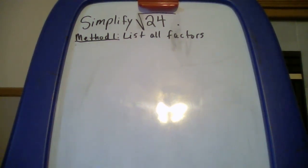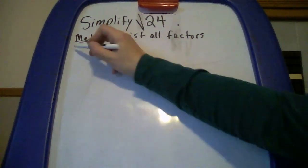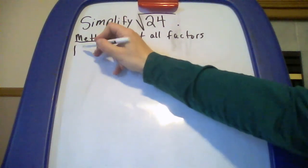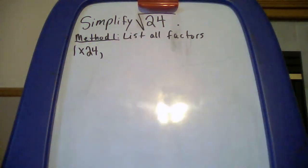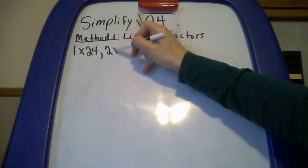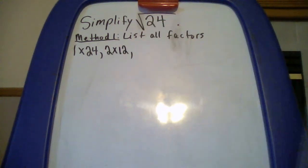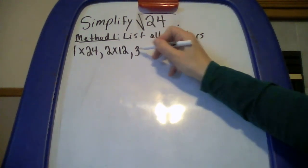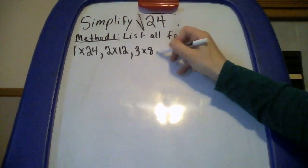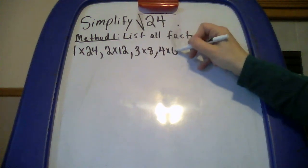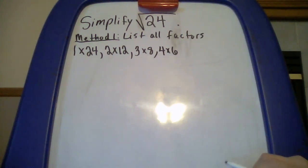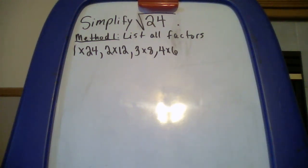Our first method is listing all the factors out. I'm going to list its factor pairs. The first one is 1 times 24. Next factor pair: 2 times 12. 3 goes into 24, so 3 times 8. 4 goes into 24, so 4 times 6. 5 does not go into 24, and 6 we already have in the list, so we are done. We've listed all the factors of 24.